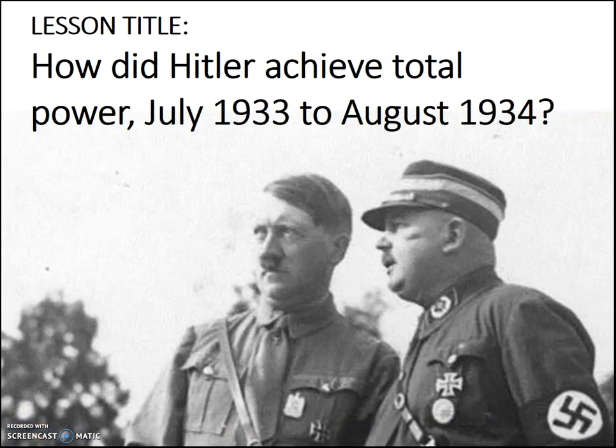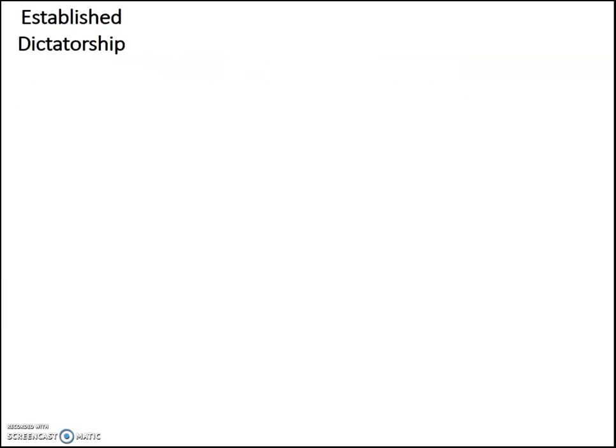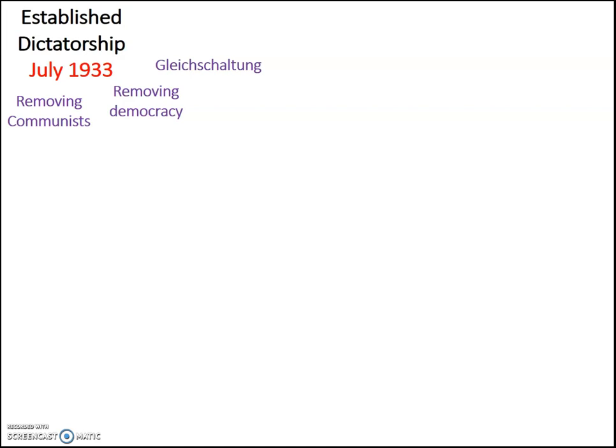In this video I'm going to talk about how Hitler achieved total power from July of 1933 until August of 1934 — the next year in the story. In the last video we looked at how Hitler established his dictatorship by July of 1933, and we said that he did that in four different ways: he removed the communists, he removed democracy, he followed the policy of Gleichschaltung or bringing the Germans into line, and lastly he removed opposition.